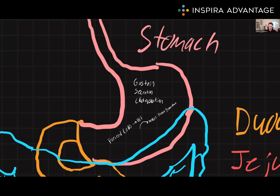The stomach also acts as a storage organ, holding onto the chyme until it's ready to be released into the small intestines. Gastrin and cholecystokinin, CCK, are the hormones that regulate the release of stomach acid and enzymes. In a later video, we will explore these hormones in greater depth.